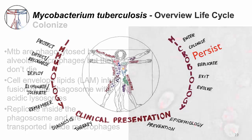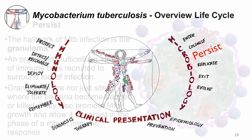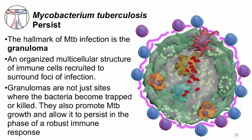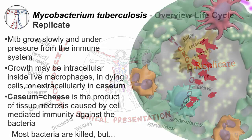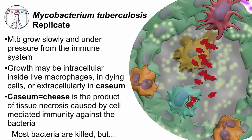The next part of the life cycle is PERSIST. The hallmark of MTB infection is the granuloma — a well-organized, multicellular structure of immune cells recruited to surround a focus of infection. However, granulomas are not just a site for trapping and killing bacteria; they are also a site where MTB can persist and actively modulate the immune response to grow and then exit. The next step is REPLICATE. MTB grows slowly and under pressure from the immune system. Growth can occur intracellularly inside live macrophages, inside dying macrophages, and also extracellularly in necrotic tissue. The necrotic tissue within granulomas is called caseum because it looks cheese-like, and the necrosis is caused by an activated T-cell response that enables killing of MTB-infected cells. Many of the MTB bacilli are killed during this process, but some survive.